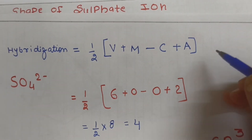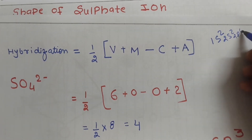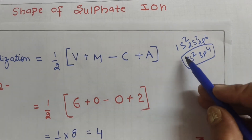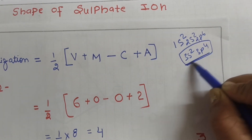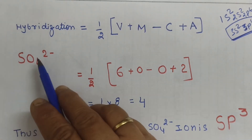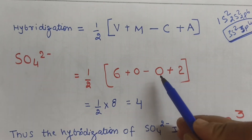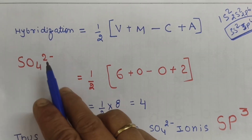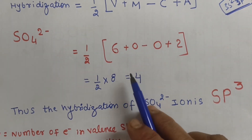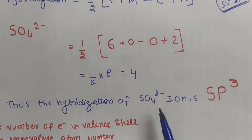Sulfur has atomic number 16, with configuration 1s² 2s² 2p⁶ 3s² 3p⁴. The outermost shell is the third shell, giving 6 valence electrons. Oxygen is divalent so M = 0, no cation so C = 0, and the anion charge A = 2. This gives H = 4, meaning sp3 hybridization.